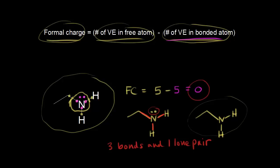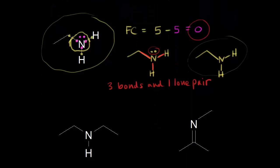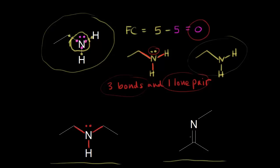Let's look at other examples where nitrogen has a formal charge of zero. Starting with the example on the left: if this nitrogen has a formal charge of zero, let's count its bonds — one bond, two bonds, three bonds. With three bonds and a formal charge of zero, we know there should be a lone pair of electrons on that nitrogen. You could leave it off and just know it's there, or draw it in. For the example on the right, we again count one, two, three bonds, and with three bonds and FC=0, we'd still need one lone pair of electrons. You could draw them in.